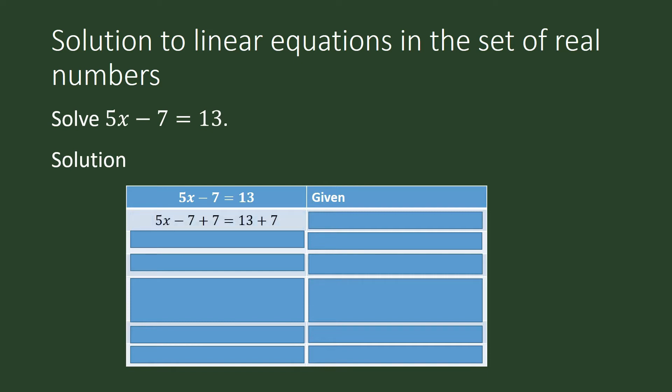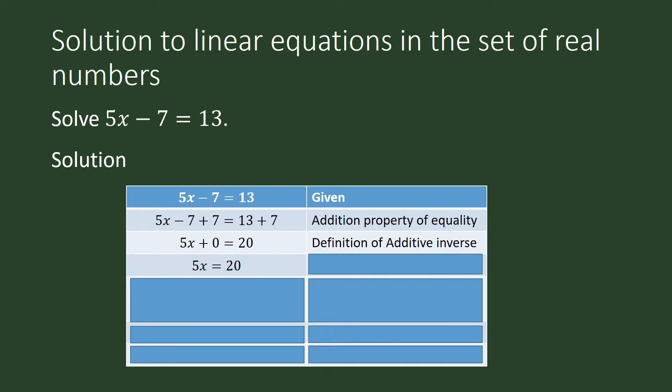You add 7 on both sides. Addition property of equality. Negative 7 plus 7 is 0. 13 plus 7 is 20. 5x equals 20. Definition of additive identity.